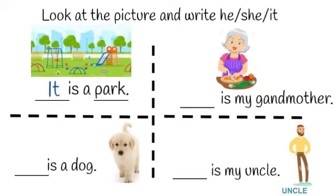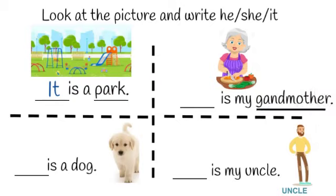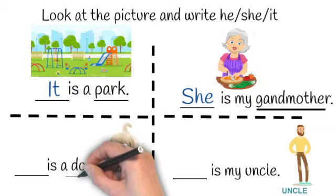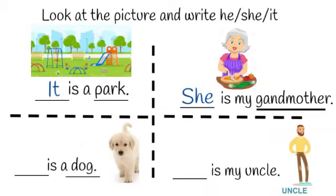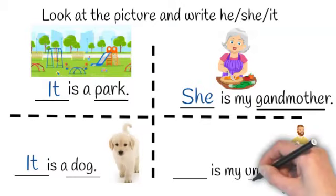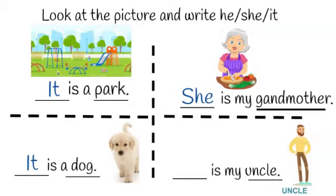See the next picture — it is a picture of a woman, a grandmother. So we will write she is my grandmother. See the next picture — it is a picture of a dog, and for an animal we write it, so we will say it is a dog. The last picture is a picture of a man — an uncle. An uncle is a man, so we will write he is my uncle.